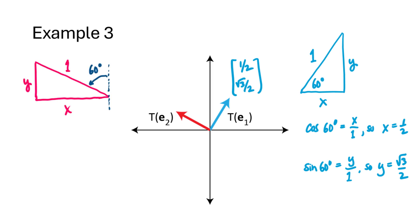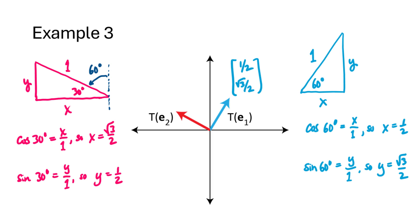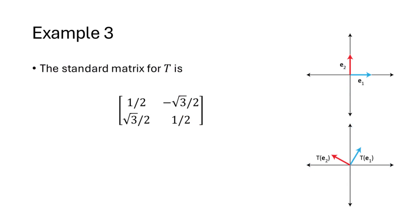For t(e2), there is a 60-degree angle formed between the y-axis and the rotated vector t(e2), giving us a right triangle with a 30-degree angle. Trigonometry tells us the horizontal side is √3/2 and the vertical side is 1/2. Since we're in quadrant 2, the x-component is negative, so t(e2) is (-√3/2, 1/2). The standard matrix is, reading left to right: 1/2, -√3/2 in the first column, and √3/2, 1/2 in the second.